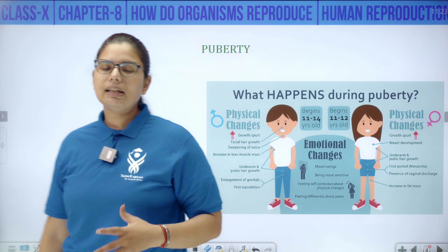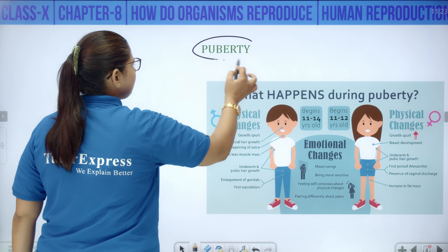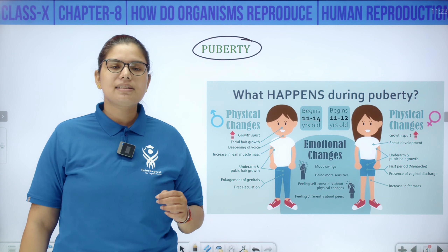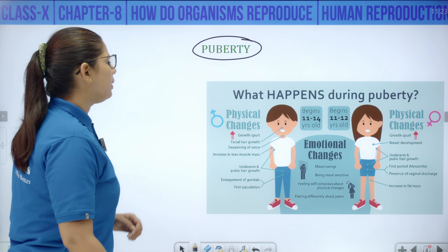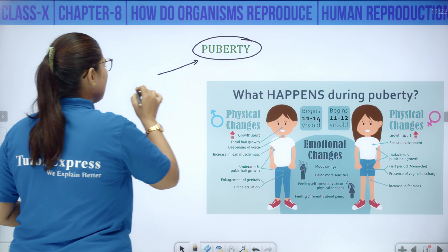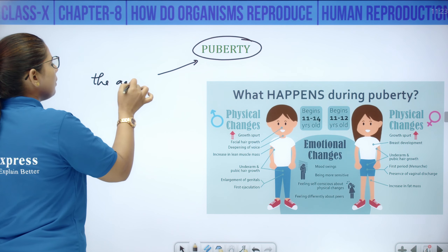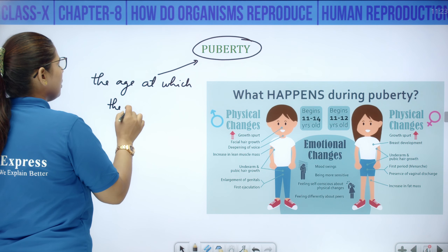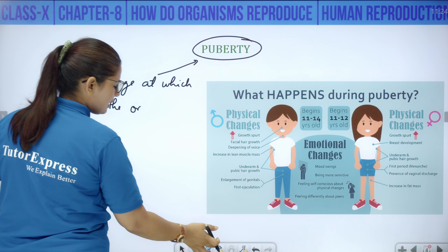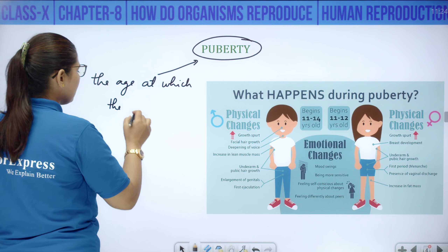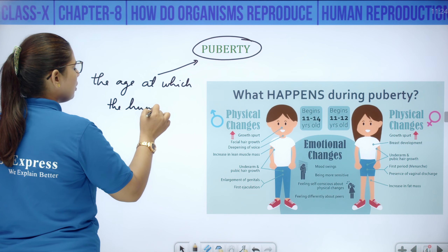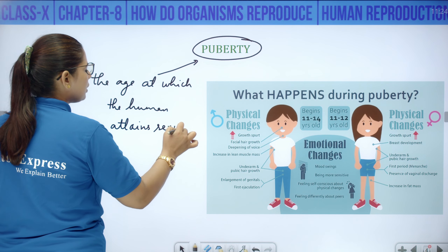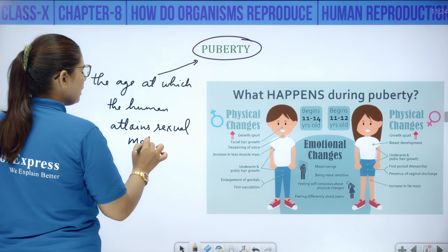Now let us begin with reproduction in human beings. The term puberty — puberty is the age at which the organism attains sexual maturity. In humans, sexual maturity is attained at this age.